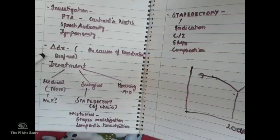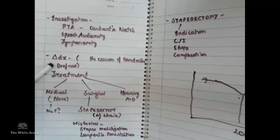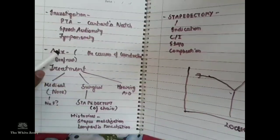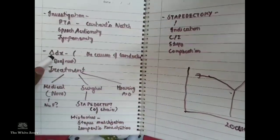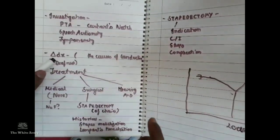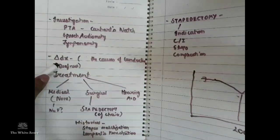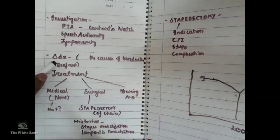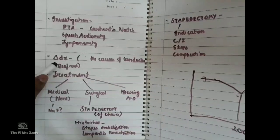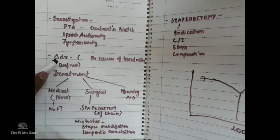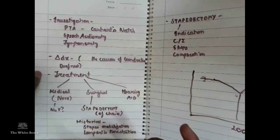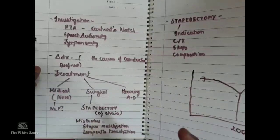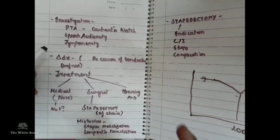The differential diagnosis of otosclerosis includes causes of conductive deafness: serous otitis media, adhesive otitis media, sclerosis around the tympanic annulus, malleus adherence or fixation to the attic, and discontinuity in the ossicles. These conditions resemble the hearing loss of otosclerosis, but will present with other distinguishing signs.